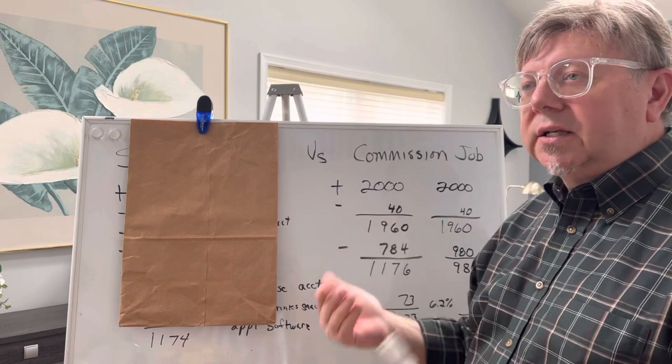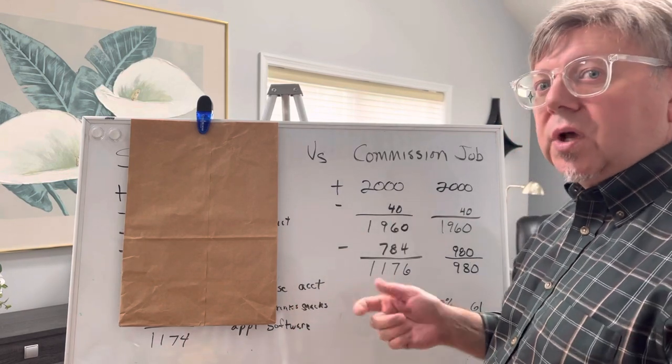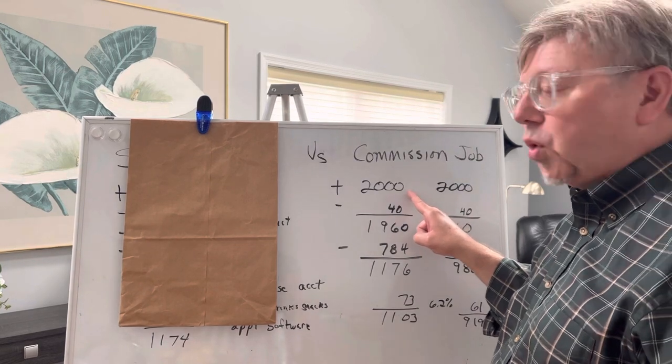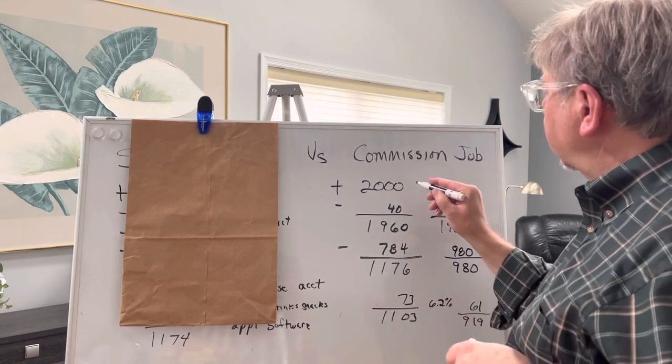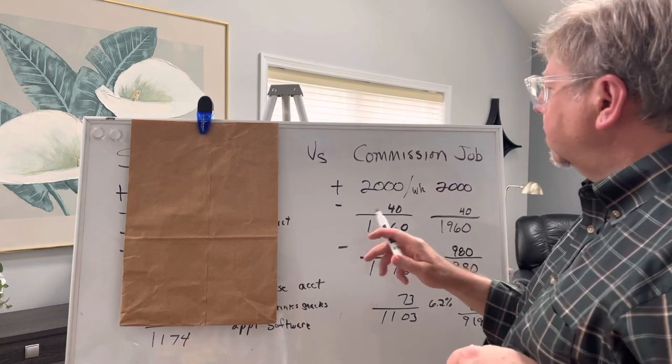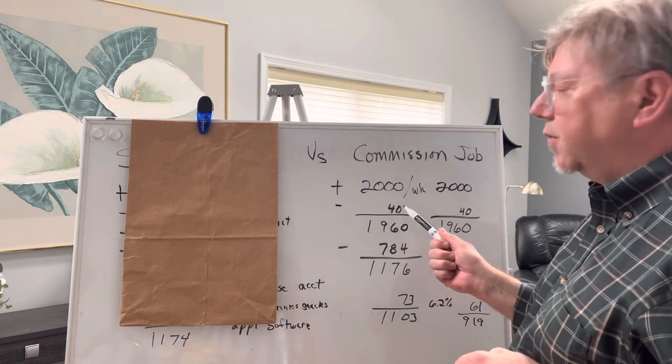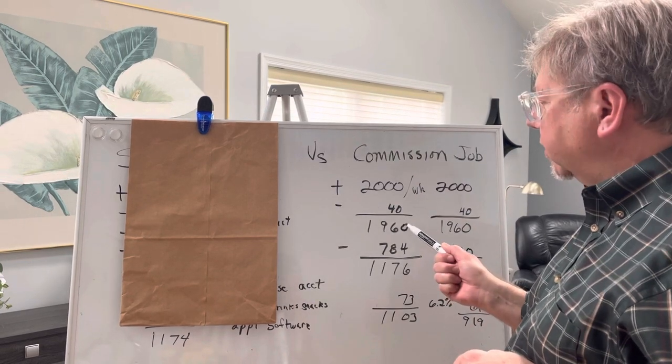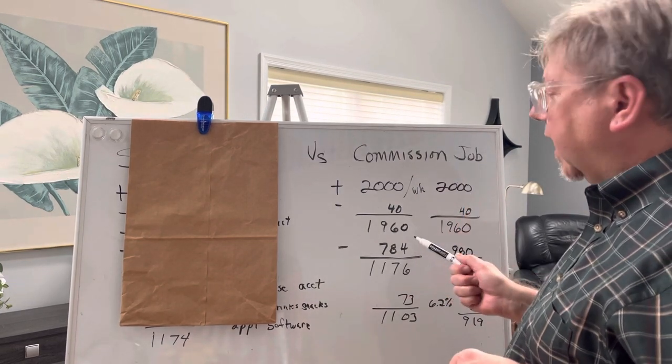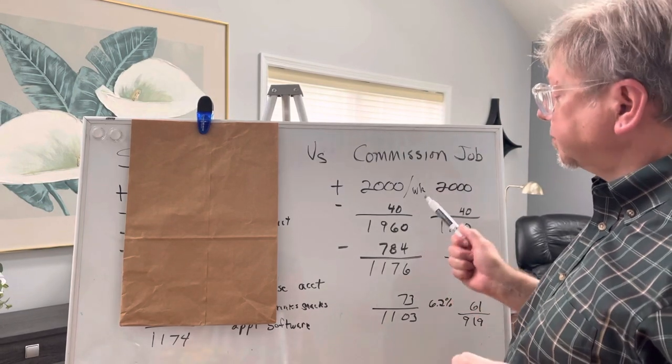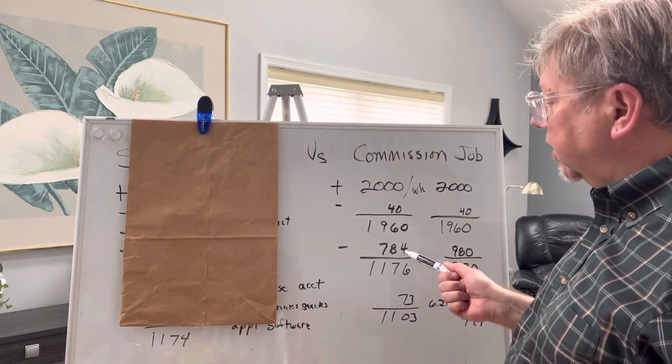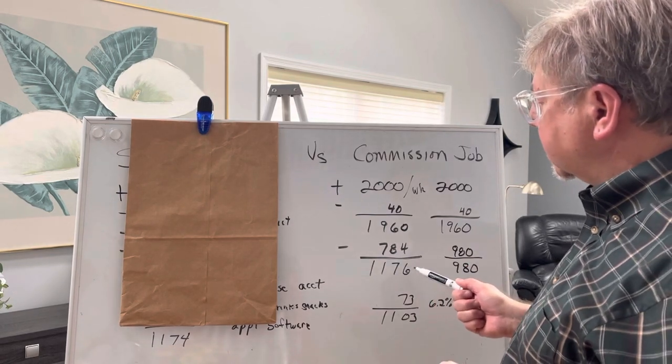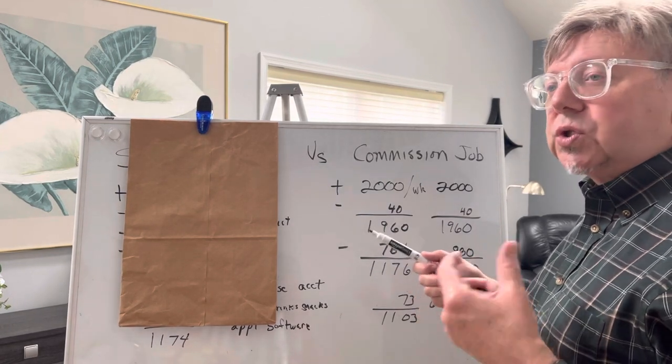The amount of money that you get to keep. Let's say that you bring in $2,000 per week. This is per week, and there's a product deduction of $40. That leaves you with $1,960. I work in a salon that pays 60% commission, and so that means $784 goes to the salon. $1,176 is the gross pay on the paycheck.